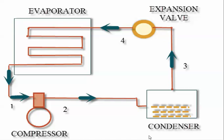In a vapor compression refrigeration system, refrigerants like ammonia, R11, R12, etc., change their phase from liquid to vapor and vice versa.